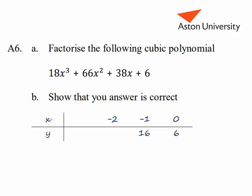So now we'll try minus 2. Minus 2 cubed is minus 8, times 18 is minus 144. Minus 2 squared is 4, times 66 is 264. Minus 2 times 38 is minus 76, plus 6 gives us 50.